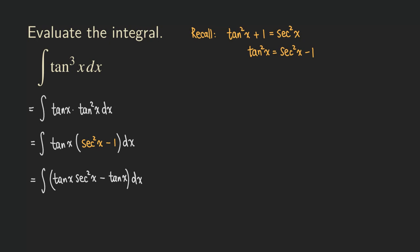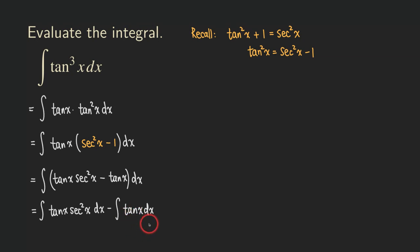We can separate this into two different integrals: the integral of tangent x times secant squared x, dx, minus the integral of tangent x, dx. Good news — we can actually integrate the tangent function directly if we know its antiderivative; otherwise we just need a simple u-substitution. For the first one, we can also integrate by a simple u-substitution.